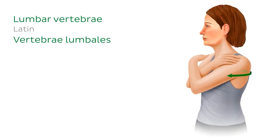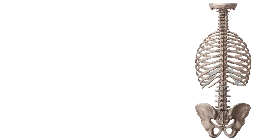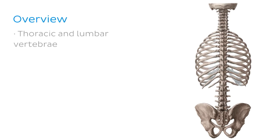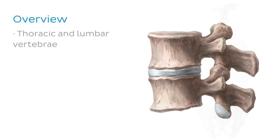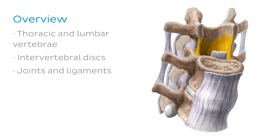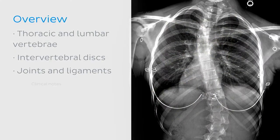Now that we're familiar with the vertebral column and the regions we're going to be talking about, let me give you a quick overview of today's tutorial. First, we're going to be looking at the bony landmarks of the thoracic and lumbar vertebrae, comparing them with one another. Next, we'll talk about the intervertebral discs, then joints and ligaments found in the thoracic and lumbar regions, and finally some clinical notes.